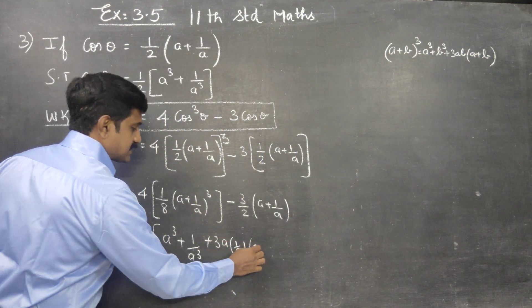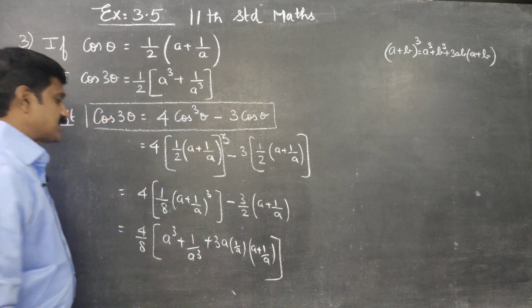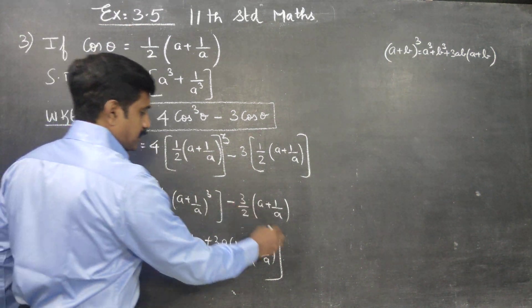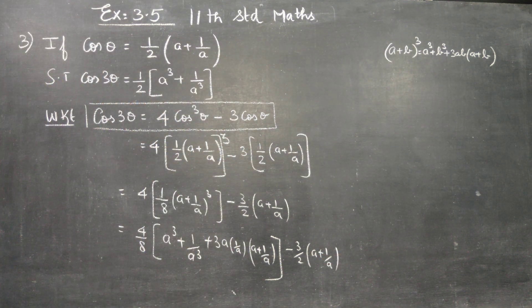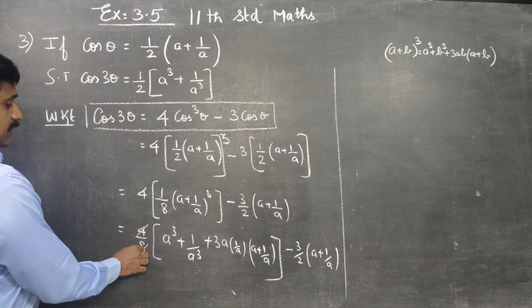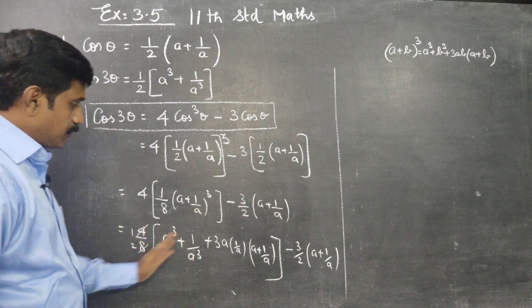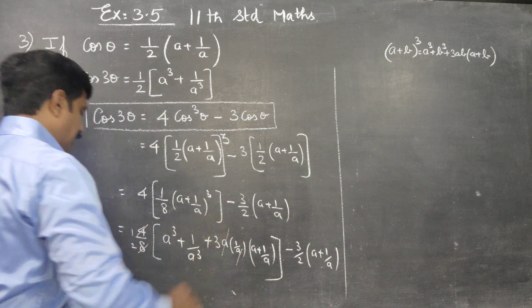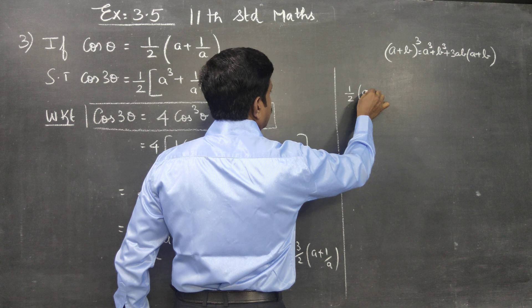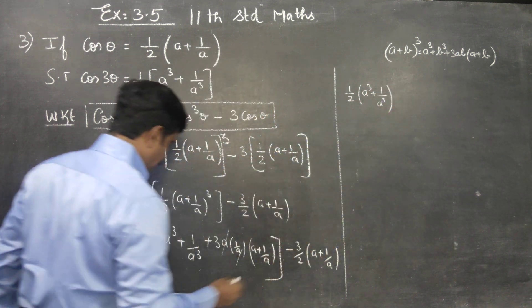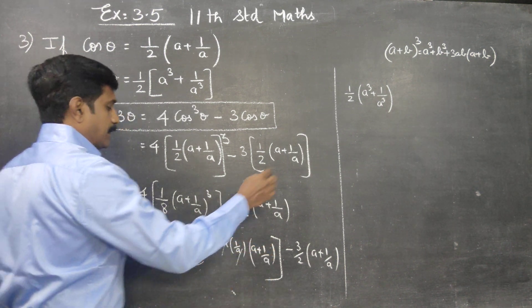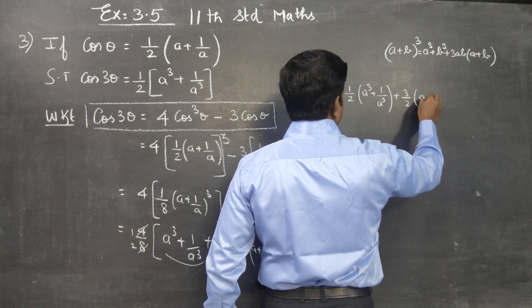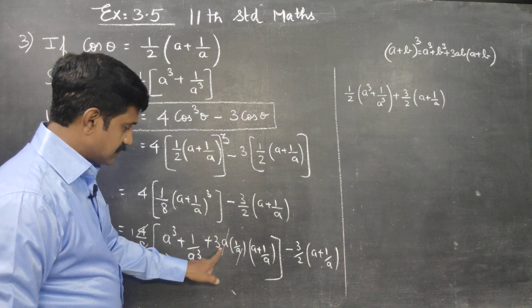Expanding (a + 1/a)³ gives a³ + 1/a³ + 3(a)(1/a)(a + 1/a), which simplifies to a³ + 1/a³ + 3(a + 1/a). Multiplying through by 1/2 gives (1/2)(a³ + 1/a³) + (3/2)(a + 1/a). The minus 3/2(a + 1/a) term from the original substitution is now present.